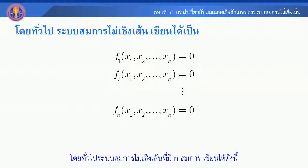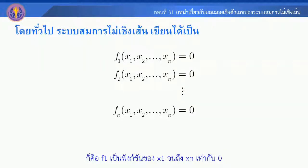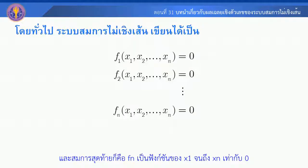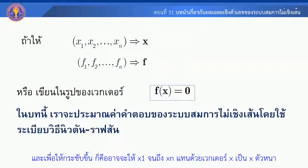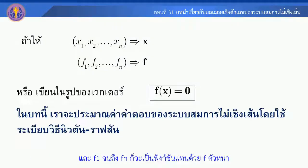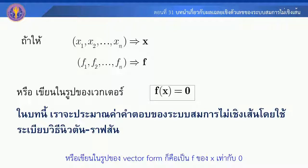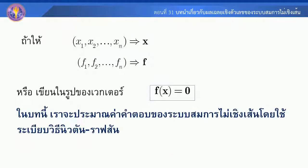The situation is such that f1 is a function of x1 to xn, f2 is a function of x1 to xn, and fn is a function of x1 to xn. The function of x1 to xn is x to x, and f1 to fn is a function vector form written as f(x).